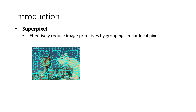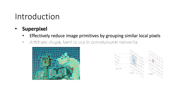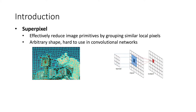In computer vision, the subpixel is an effective way to reduce image primitives for fast computation, but it has not been widely used in convolutional neural networks. One main reason is that subpixels have arbitrary shapes, while standard convolution is defined on a regular grid.